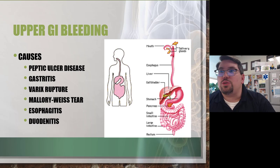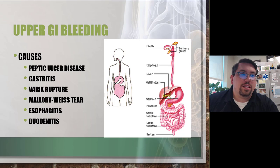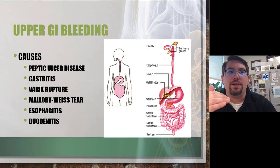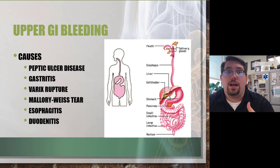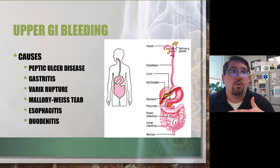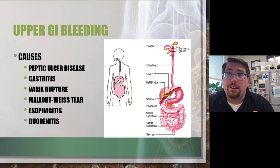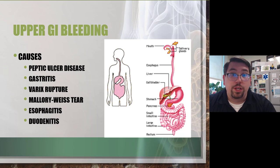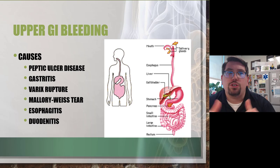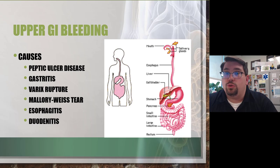Looking at upper gastrointestinal diseases: the upper GI tract consists of the mouth, esophagus, stomach, and duodenum — the first part of the small intestine. Physical and some chemical digestion takes place through mastication, stomach acids, and gastric components. Some substances are absorbed directly through the stomach lining. Nutrients are absorbed into blood, solid waste is formed, and then excreted as stool through a bowel movement.